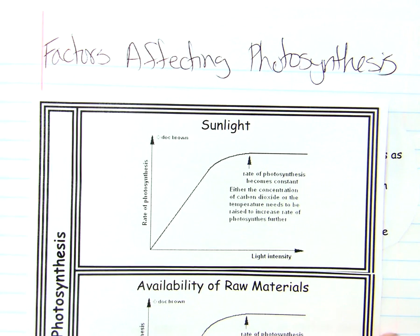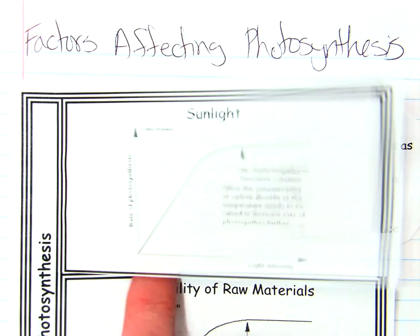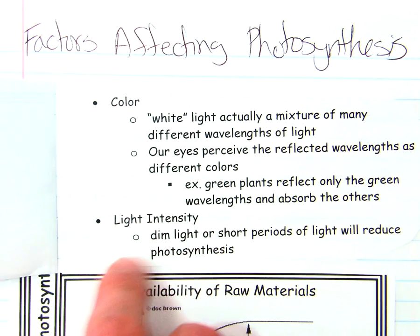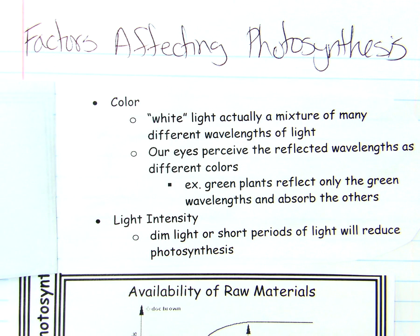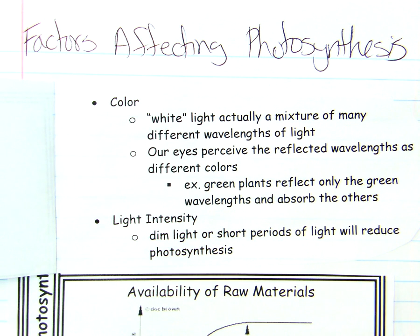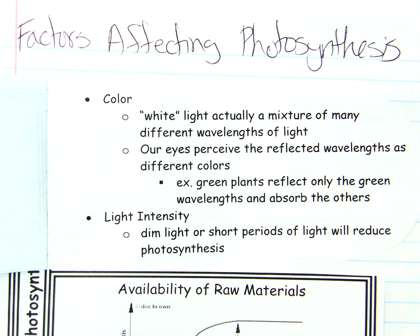We're going to talk about sunlight first. This is the longest one and the rest are much shorter. With sunlight, there are two things that can affect photosynthesis. The first one is the color of light. You may recall from middle school that white light, like the lights in this room, is actually a mixture of light colors. If you hold it up to a prism, you get a rainbow — a full spectrum of different wavelengths of light colors.